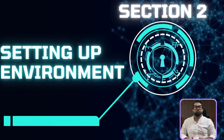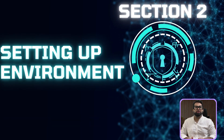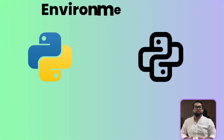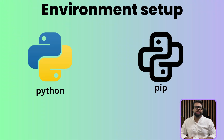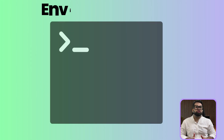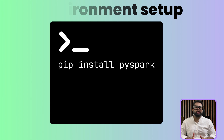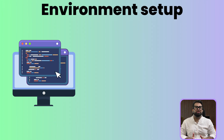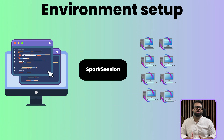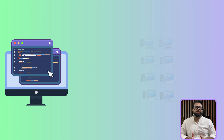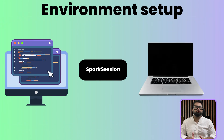Before we can build our pipeline, we need to set up our environment. Luckily, it's very simple. As long as you have Python and its package installer pip, you are ready. Just open your terminal and run this one command: pip install pyspark. That's it. With PySpark installed, every script you write will start by creating a SparkSession. This is your gateway to all of Spark's power, connecting your Python code to a Spark cluster — even if that cluster is just your laptop for now.